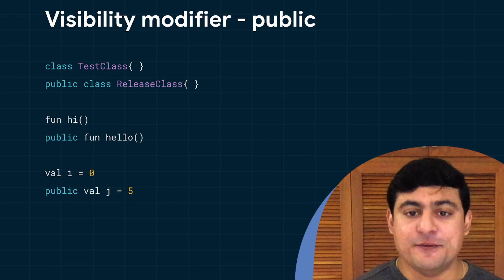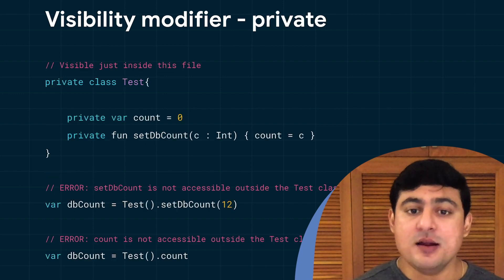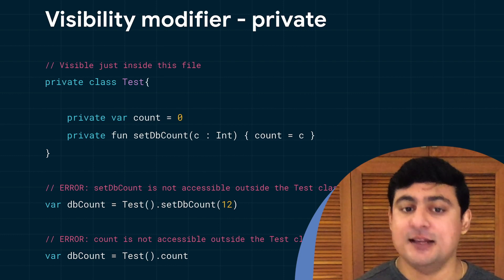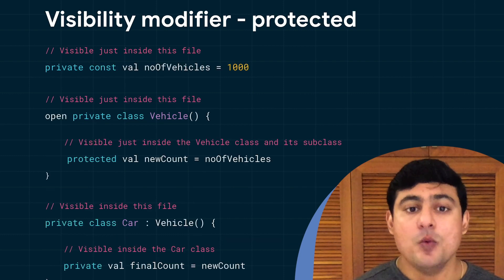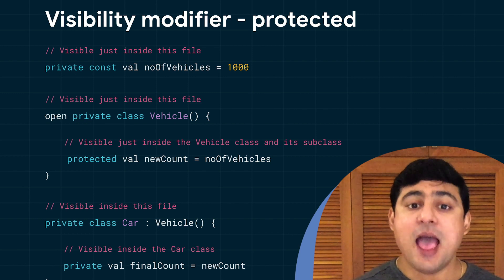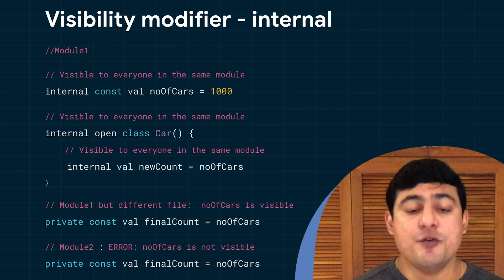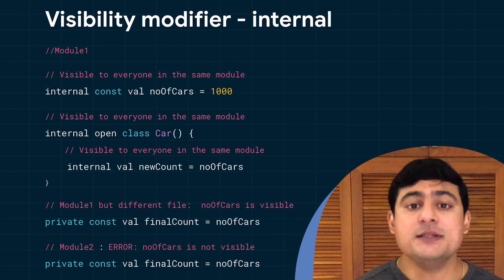Public is used by default, which means that your declarations will be visible everywhere. If you mark a declaration private, it will only be visible inside the file containing the declaration. Declarations marked with the protected modifier are visible inside the file containing the declaration and the subclasses — hence this modifier is not allowed for top-level declarations. If you mark it as internal, it's visible everywhere in the same module, and variables and classes declared in one module cannot be accessed in another.